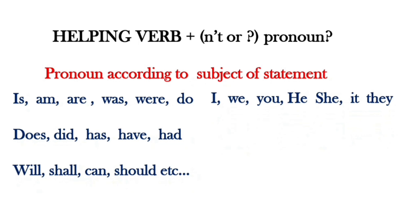If you ask the question tag, the structure is: helping verb + not + pronoun. It's the smallest question. For example: Isn't he? Isn't it? Isn't she?